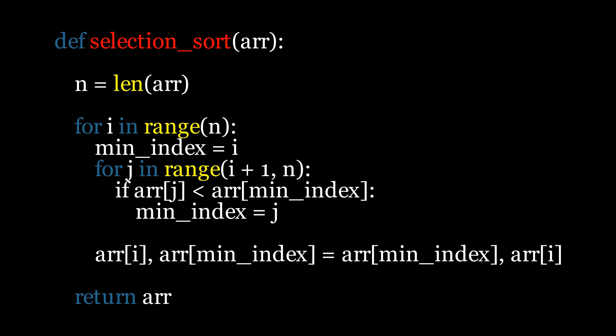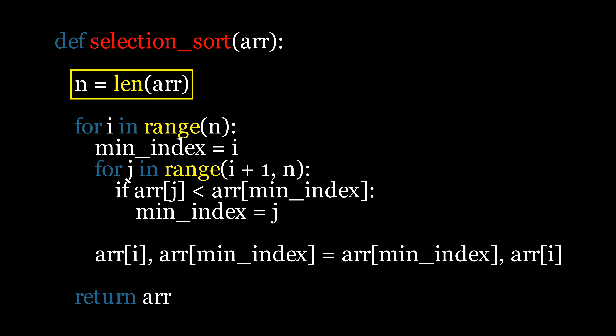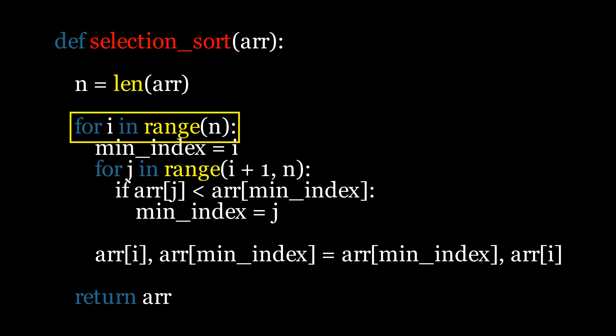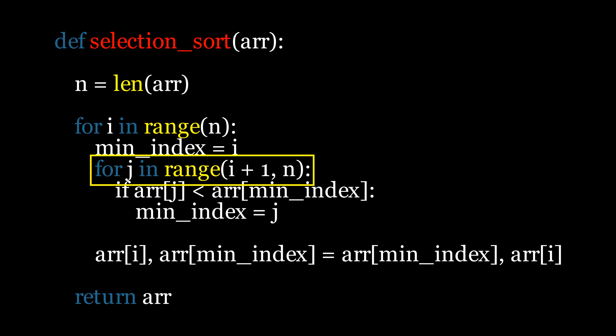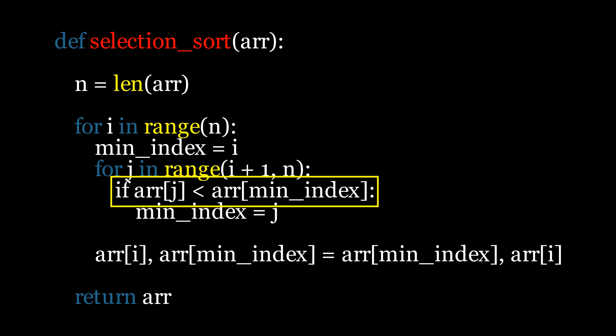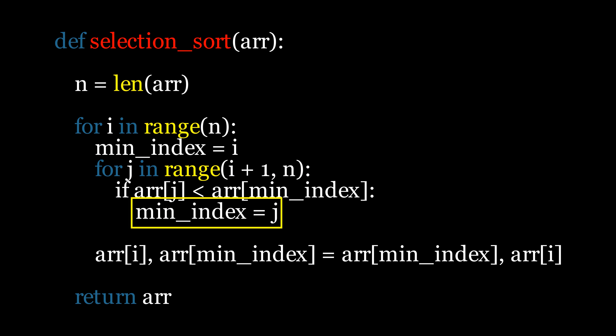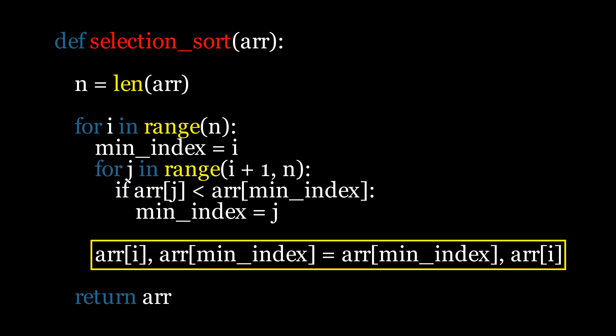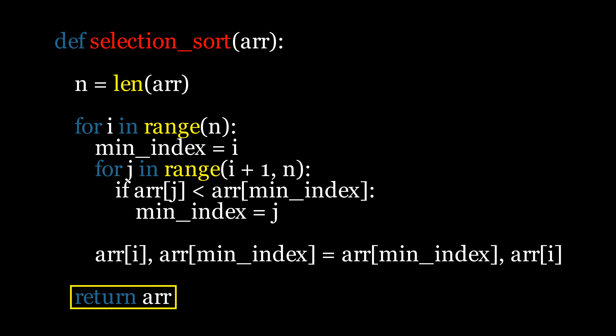Now let's look at the code for selection sort. It starts by defining a function that takes the unsorted array as input. We then create a variable n to hold the length of the array. A for loop runs n times to process each element. Within the loop, we initialize a variable min_index to keep track of the index of the minimum value found in the unsorted portion of the array. An inner loop runs from the beginning of the unsorted portion to the end, comparing each element with the element at the current min_index. If a smaller element is found, the min_index is updated. After the inner loop finishes, we swap the element at the current position with the element at min_index, placing the smallest element in its correct position. This process continues until the entire array is sorted, and finally the function returns the sorted array.